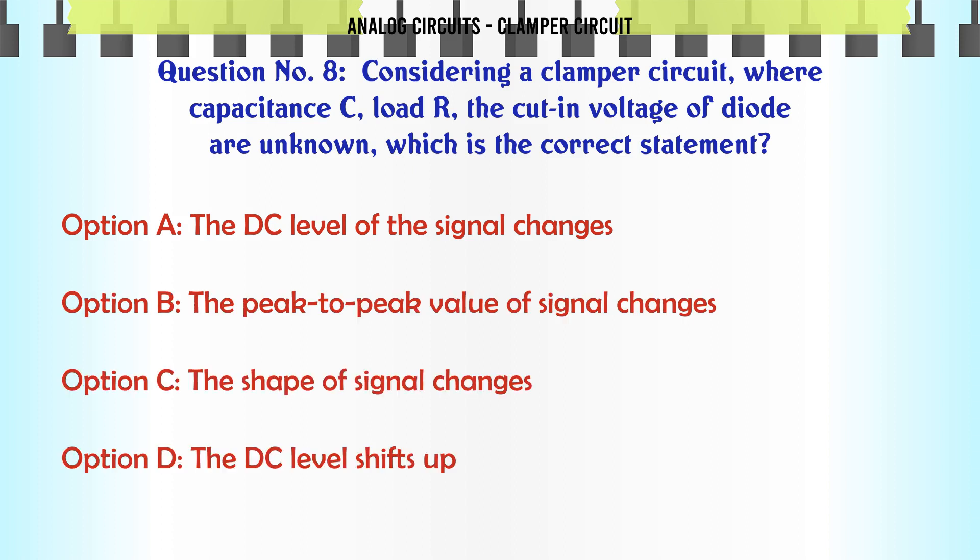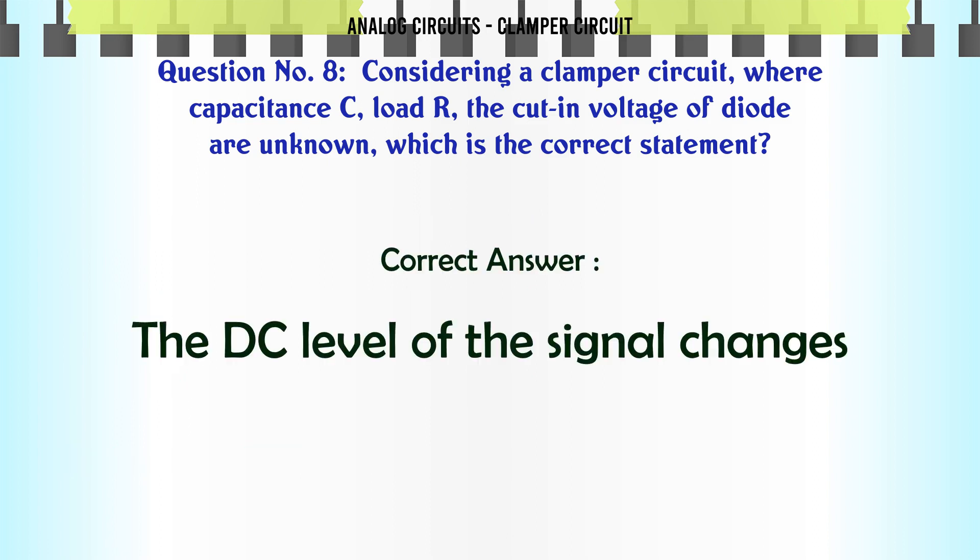Considering a clamper circuit where capacitance C, load R, and the cut-in voltage of diode are unknown, which is the correct statement? A: The DC level of the signal changes, B: The peak-to-peak value of signal changes, C: The shape of signal changes, D: The DC level shifts up. The correct answer is the DC level of the signal changes.